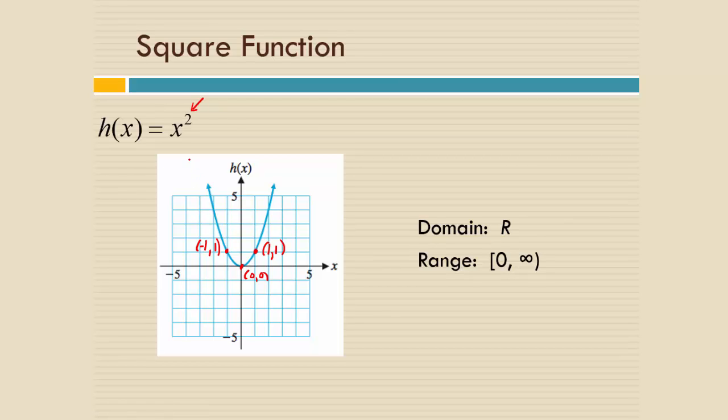It goes forever out to the left. It will never stop going in this direction. Yes, it's going upward, but it's also going to the left, and then it goes forever out to the right as well. So the domain, the x values, include everything. Another way of thinking of that is we can plug any x we want into x², and you can square any number. There's no restrictions on that. Why is the range [0, ∞)? Because it stops at 0. The lowest point is 0, but then it goes up forever.